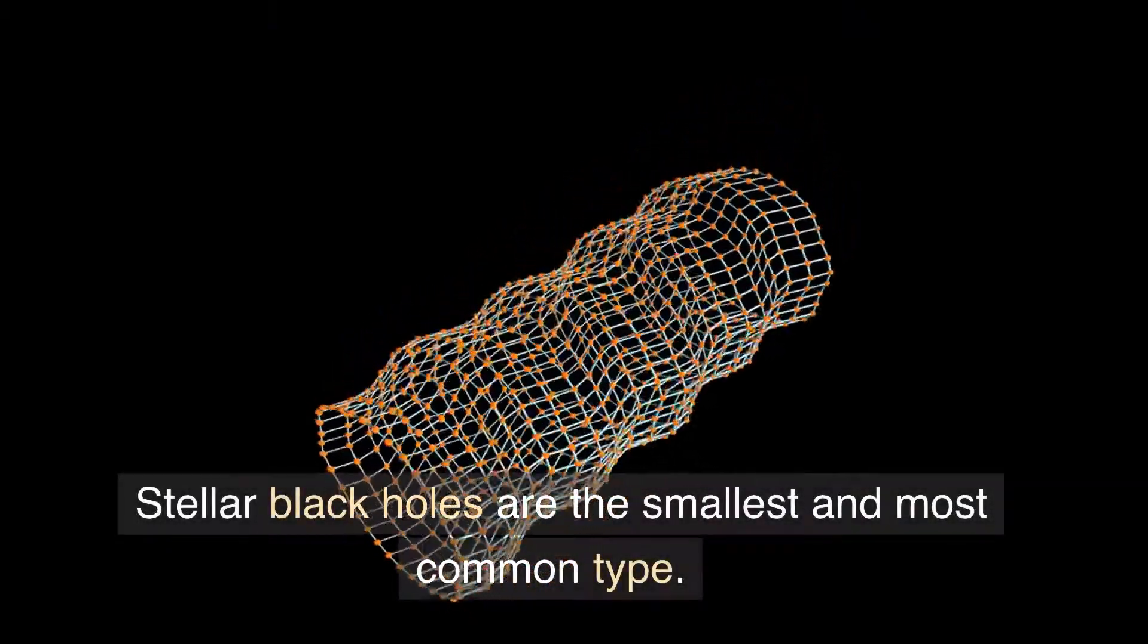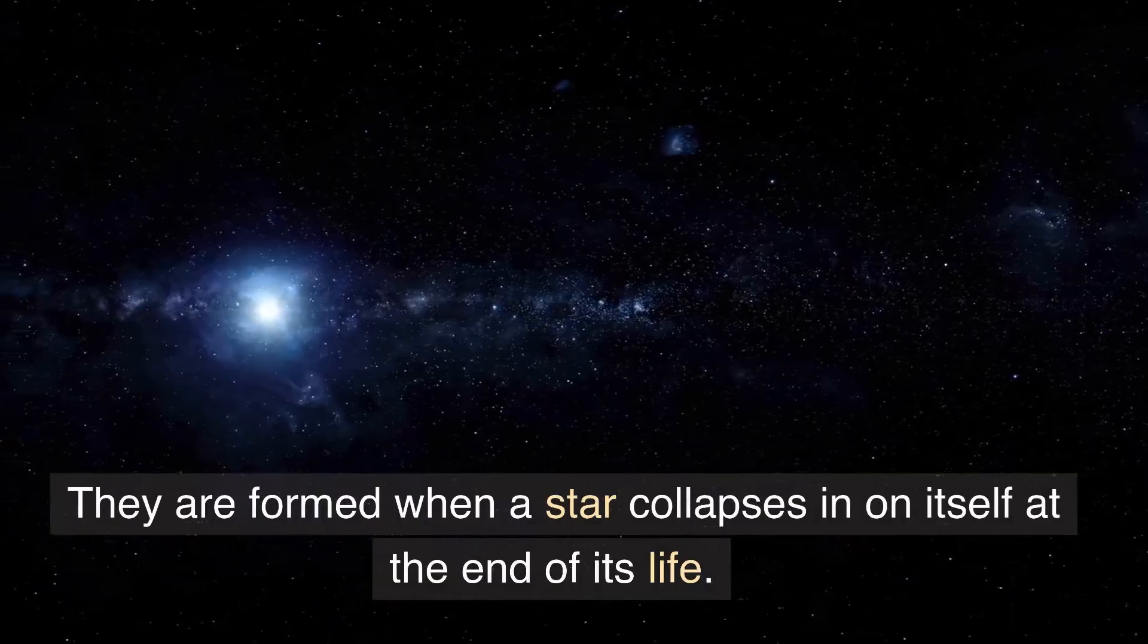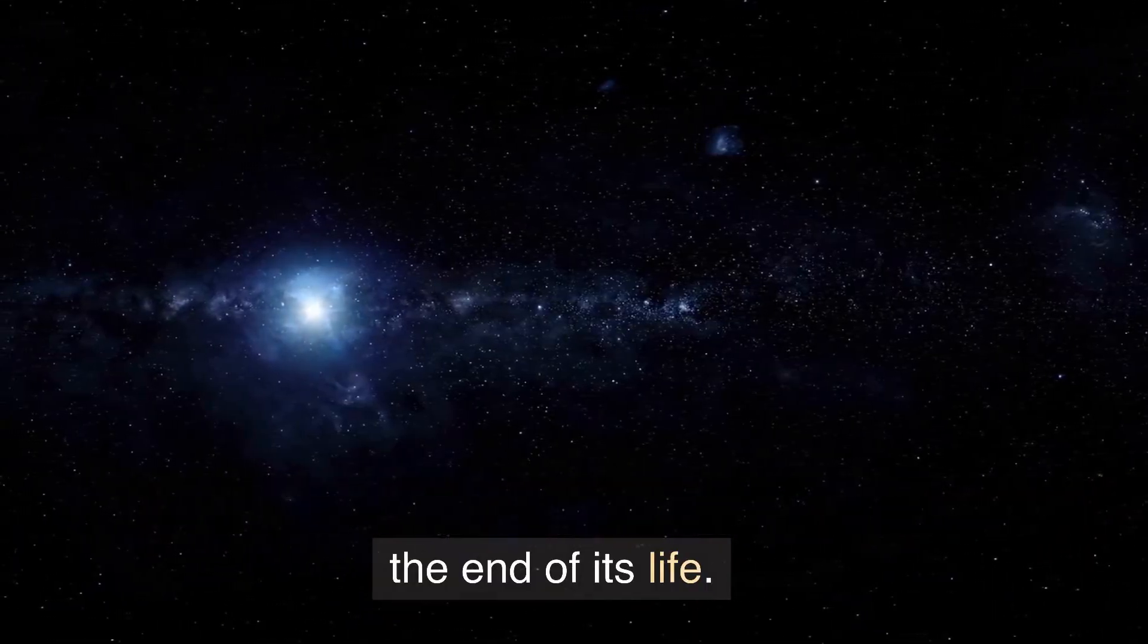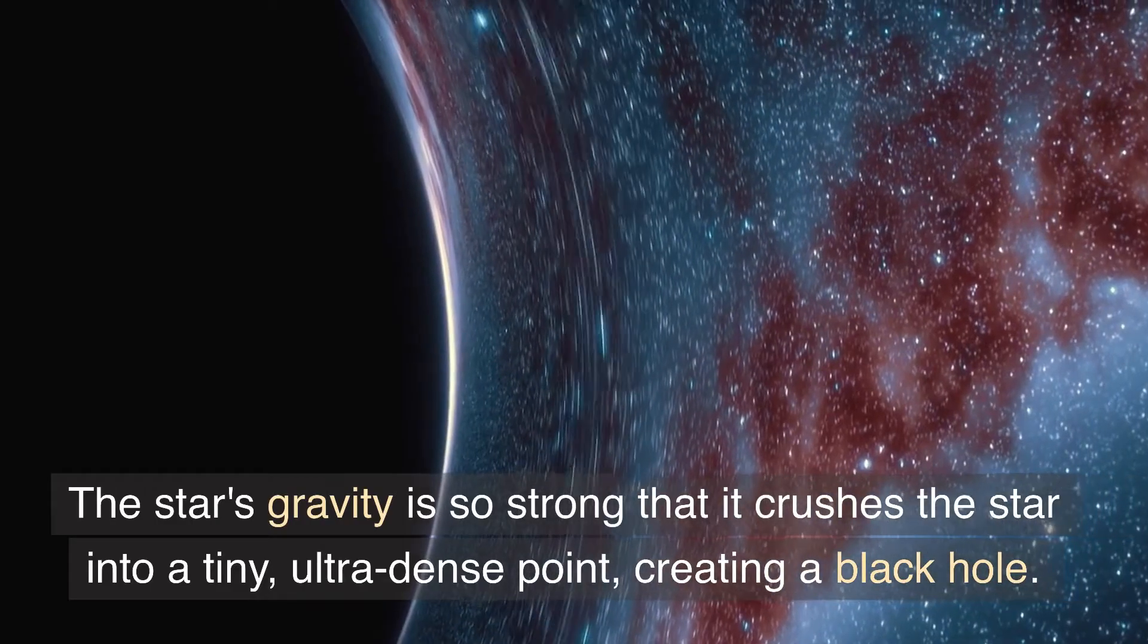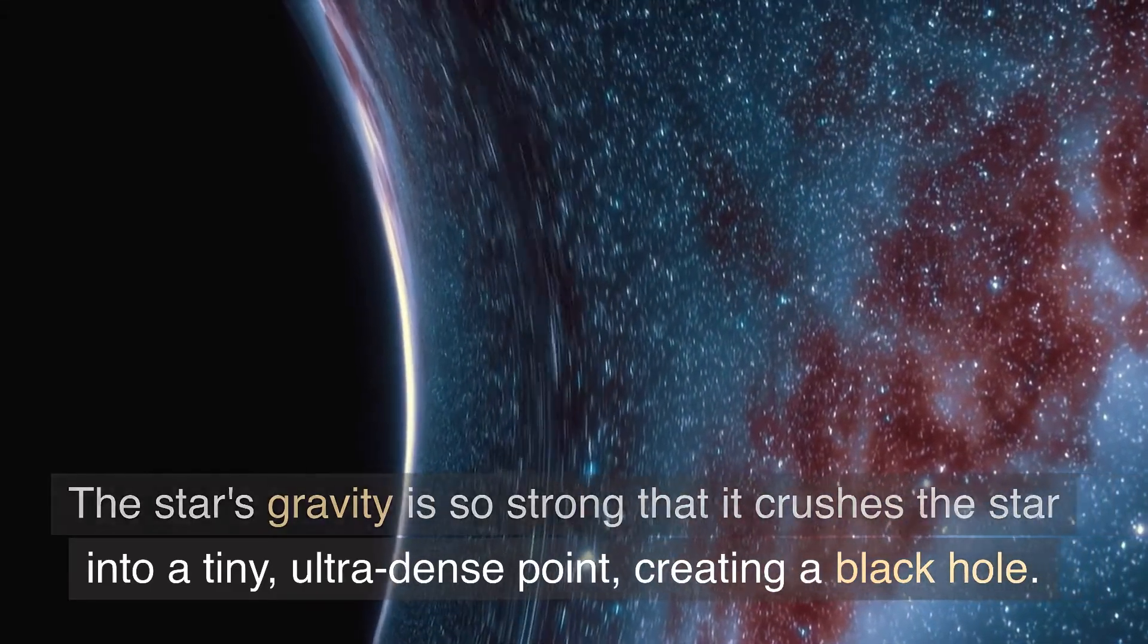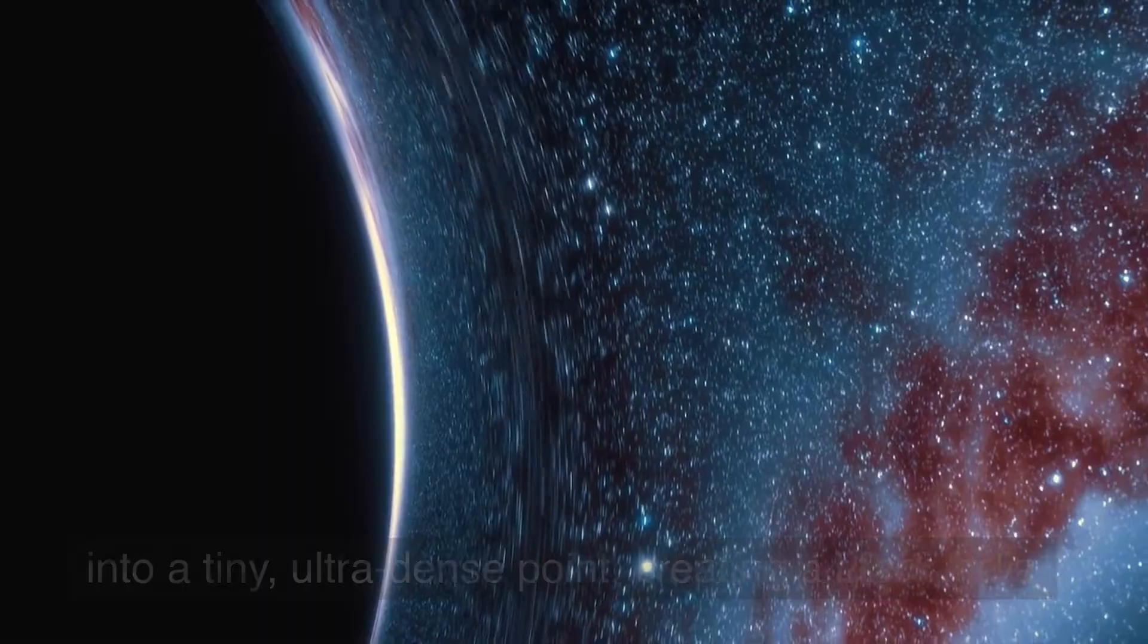Stellar black holes are the smallest and most common type. They are formed when a star collapses in on itself at the end of its life. The star's gravity is so strong that it crushes the star into a tiny, ultra-dense point, creating a black hole.